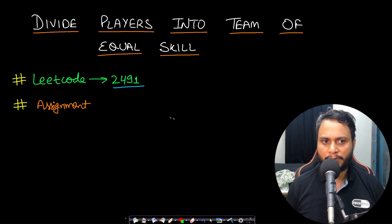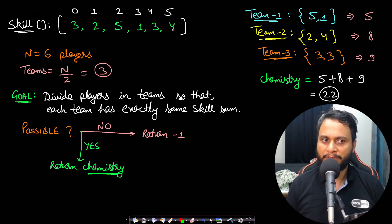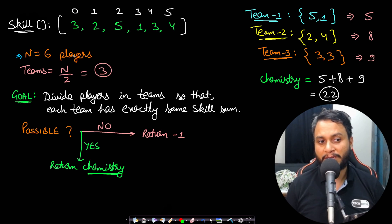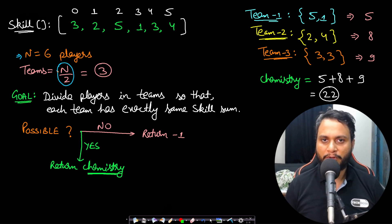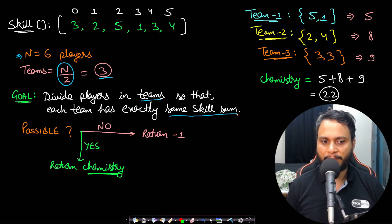Let's look at an example. Say we have 6 players with skills 3, 2, 5, 1, 3, 4. Since the number of players is 6, the number of teams will be n/2 = 3, because each team has exactly 2 players. Our goal is to divide the players into 3 teams so that each team has exactly the same skill sum.